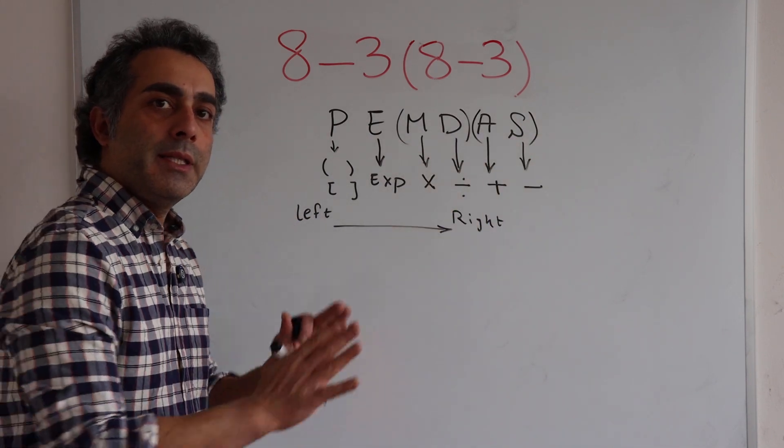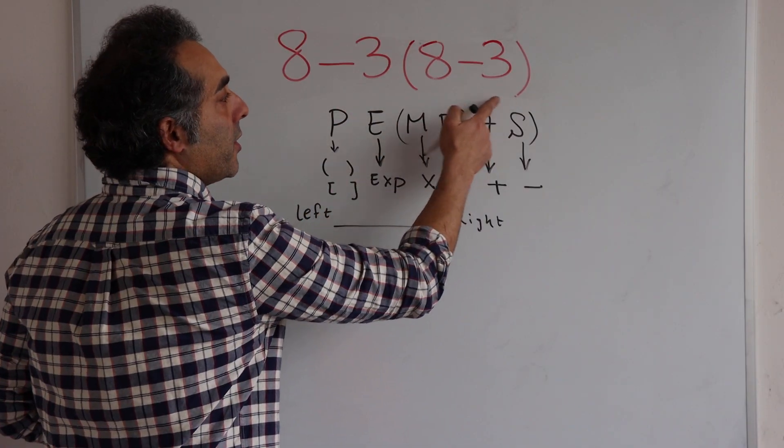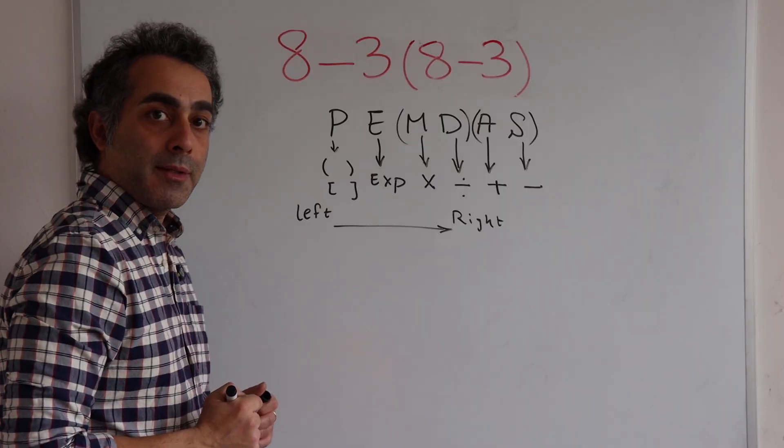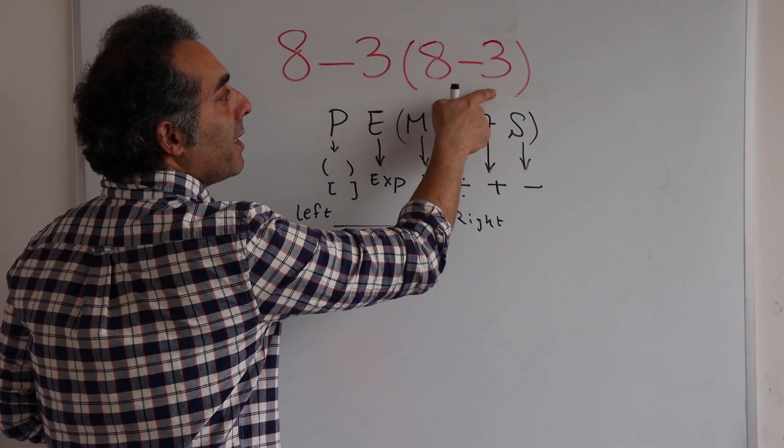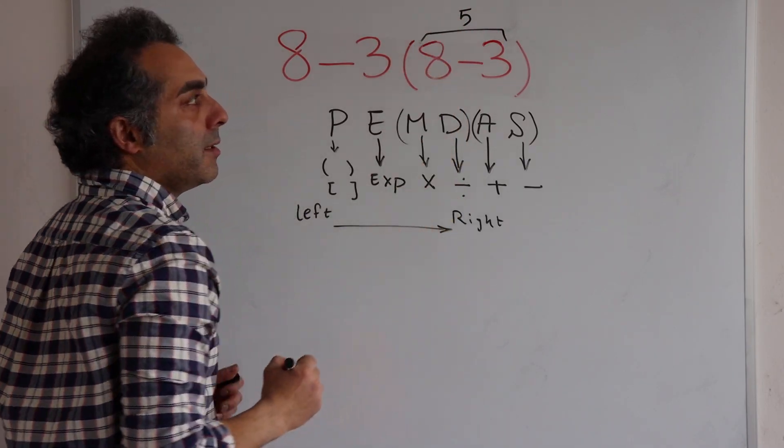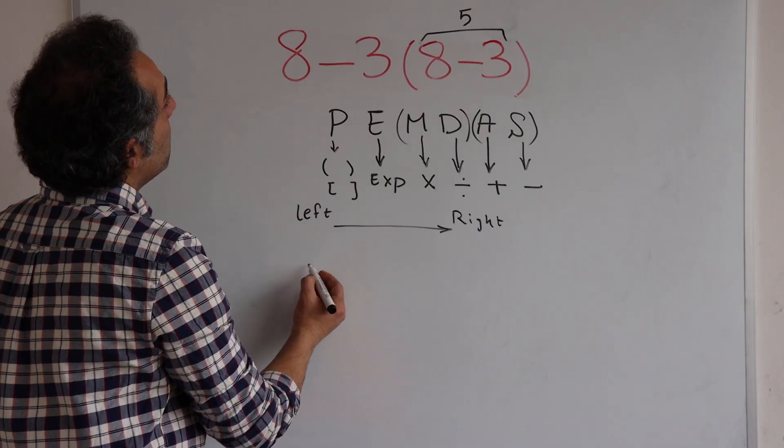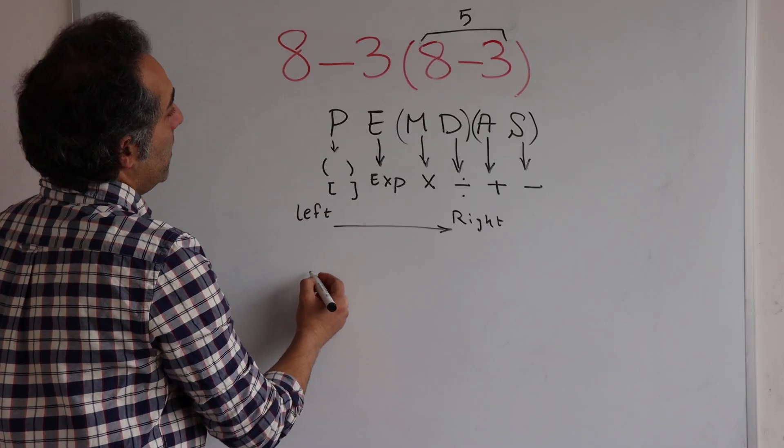We can see this situation in this calculation. We can see parentheses here so we should do parentheses first. 8 minus 3 is 5, so I can write the answer above it and rewrite the calculation here beneath this description.